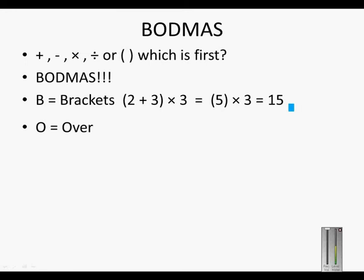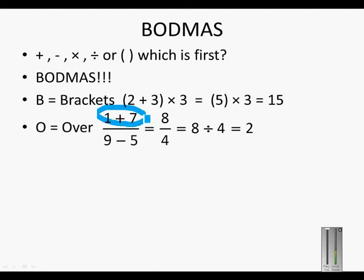The O stands for over. So in a fraction, for instance, (1 + 7) over (9 − 5), you will first do the 1 plus 7. And 1 plus 7 equals 8, and 9 minus 5 gives me 4.